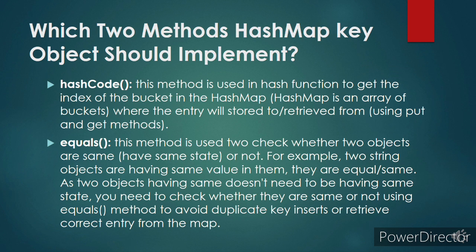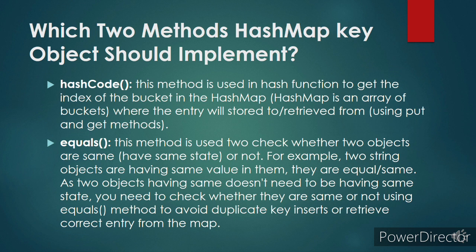The second method is equals. If you do not override equals, it will use the equals method from the Object class, which compares both value and reference. For a custom Employee object where equals is not overridden, every time it will use Object's equals method. If you create two Employee objects with new, having the same employee ID and name, it will still compare references — which will be different. So those two employees with similar values but different references will be considered unequal and treated as separate keys in the HashMap. These are the implications of not properly overriding hashCode and equals.